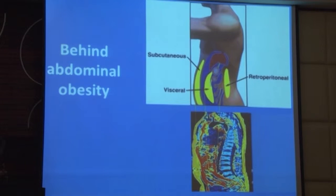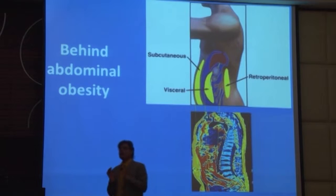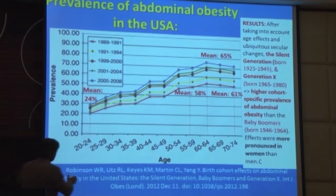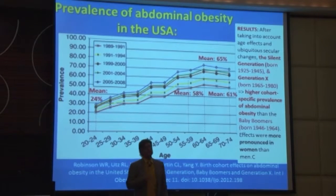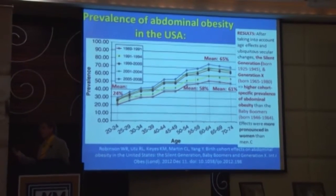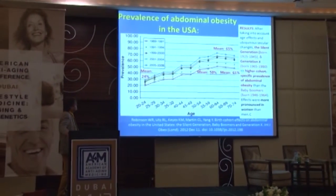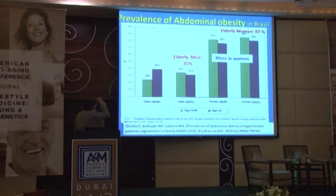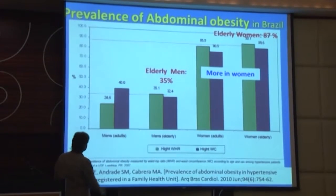Behind abdominal obesity there are three types of fat accumulation. Subcutaneous fat is not so dangerous, but visceral and retroperitoneal fat are strongly linked to disease and higher mortality. The presence of abdominal obesity increases with age, plateauing or even decreasing after age 64-65 as insulin production becomes impaired. Data from Brazil shows that abdominal obesity is even more prevalent in elderly women than in elderly men — almost all elderly women develop it.